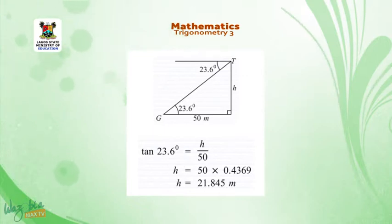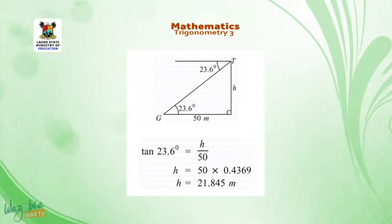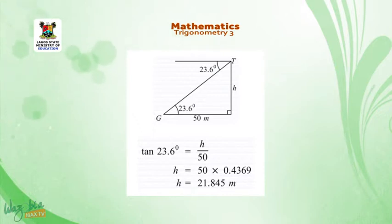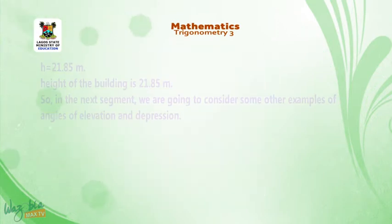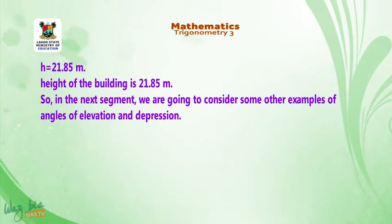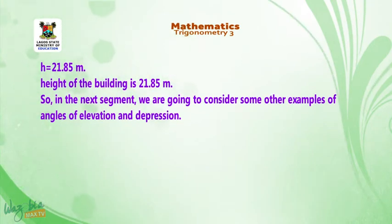Tan 23.6° is 0.4369, so H equals 50 times 0.4369, and H equals 21.845 meters. Therefore, approximately H equals 21.85 meters. The height of the building is 21.85 meters.